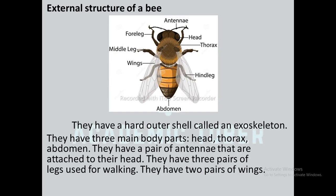External structure of a bee: they have a hard outer layer called an exoskeleton. They have three main body parts — head, thorax, and abdomen. They have a pair of antennae attached to their head, two pairs of legs used for walking, and two pairs of wings.